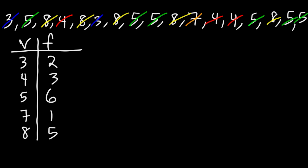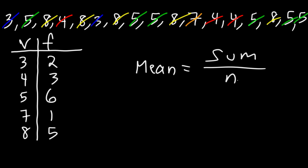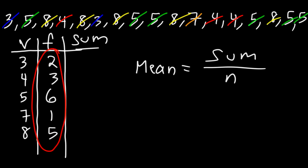Now what about the mean — the average? How can we calculate the mean in this example? The mean is basically the sum of all the numbers divided by the number of data items in our set. To get our n value, we need to add up all the numbers in the frequency column. So 2 plus 3 is 5, plus 6 is 11, plus 1 is 12, plus 5 is 17.